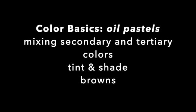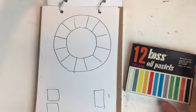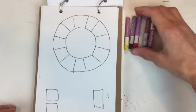We see color wheels most often with paint, but we can also use materials like oil pastels, really anything that you can blend together.